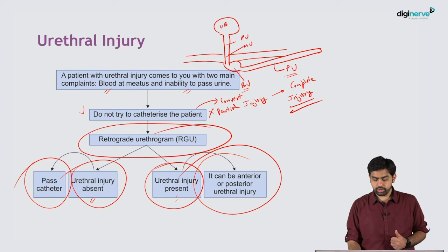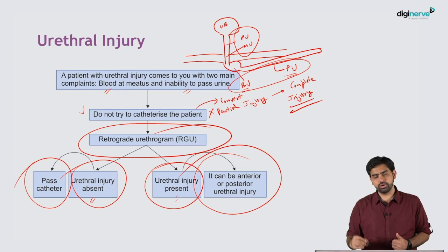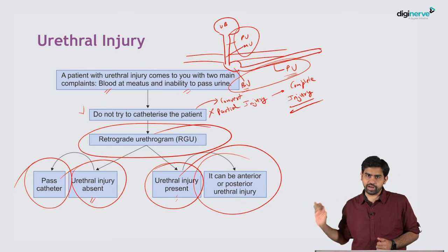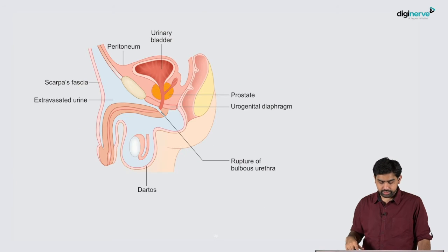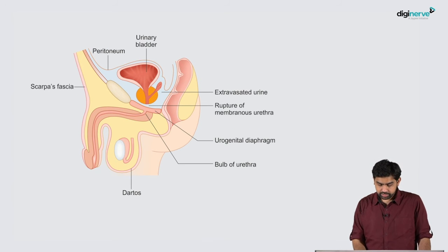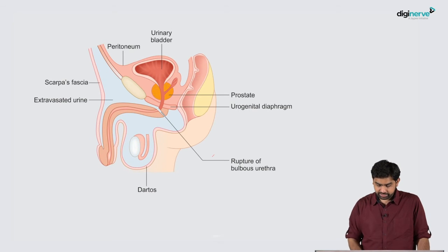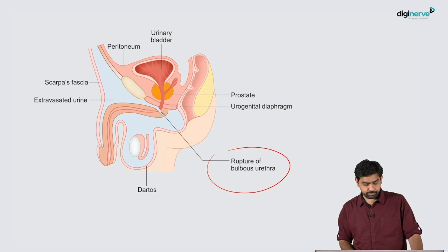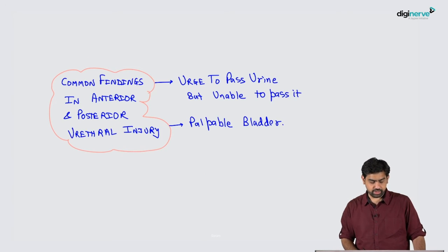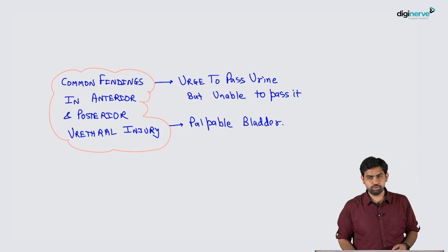The posterior urethra includes the prostatic and membranous urethra. The anterior urethra includes the bulbar and penile urethra. The mechanisms of injury differ between them. The posterior urethra can be injured at the membranous portion, or the anterior urethra — specifically the bulbous portion — can rupture.